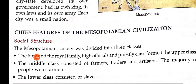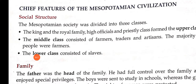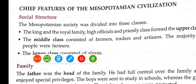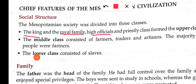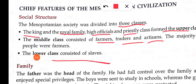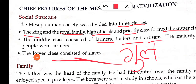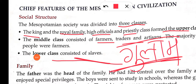Ab hum padhenge Mesopotamian civilization ke features — social structure. King, royal family, high officials, and priests formed the upper class. Society mein teen divisions the. Middle class mein aate the farmers, traders, and artisans. Lower class mein aate the slaves — aur slaves ka matlab hota hai gulam, jisko hum khareed aur bech sakte hain.